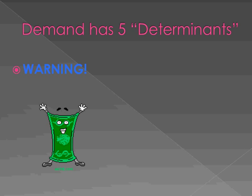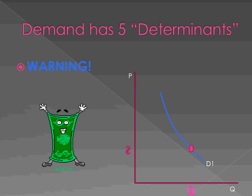Demand really has five determinants, but be careful — we do have one warning. Price is not a determinant of demand. What price is, is a change in quantity demanded. As the price increases, there's a decrease in quantity demanded, as shown by this graph.